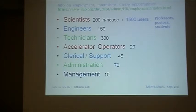That's all I have to say about why we do science. I was asked to talk about jobs in science. Let me mention a few things about jobs at Jefferson Lab. This is my last slide. If you're interested in information about employment, internships, and co-op opportunities, there's a website. We have about 200 scientists in-house. There are about 1,500 users. Those would be professors, post-docs, and graduate students. There are about 150 engineers, 300 technicians, 20 people who operate the accelerator, and others in support of administration and management. Any questions?